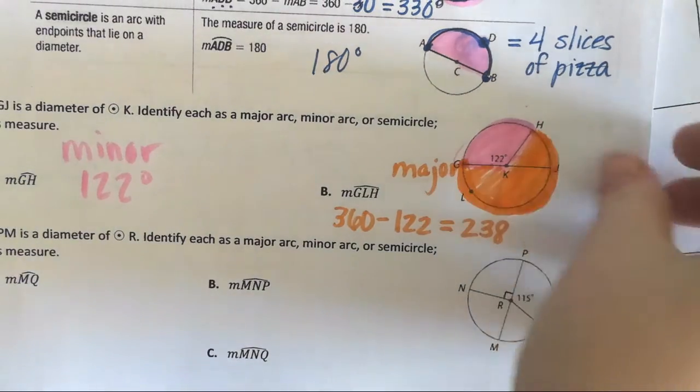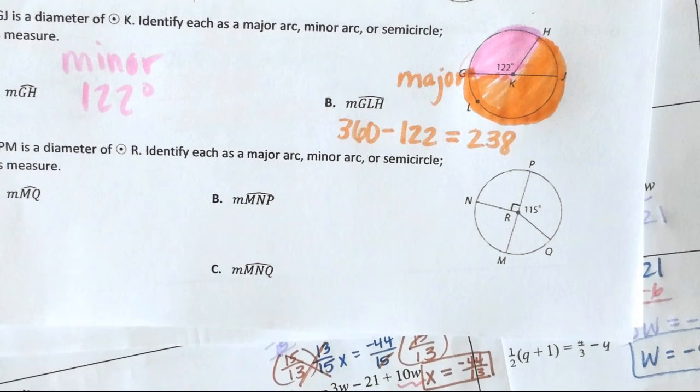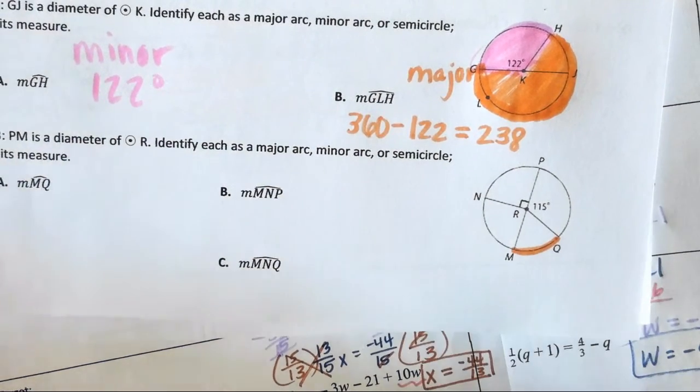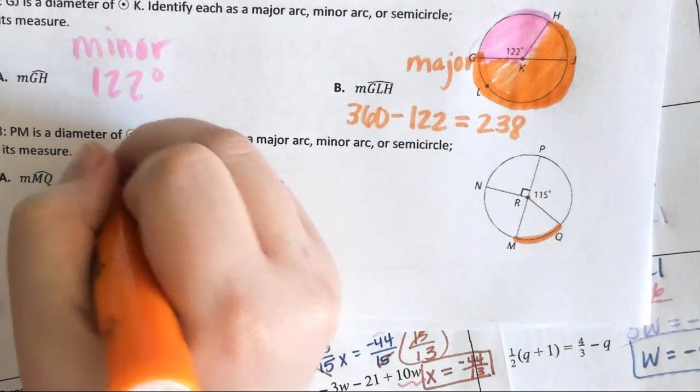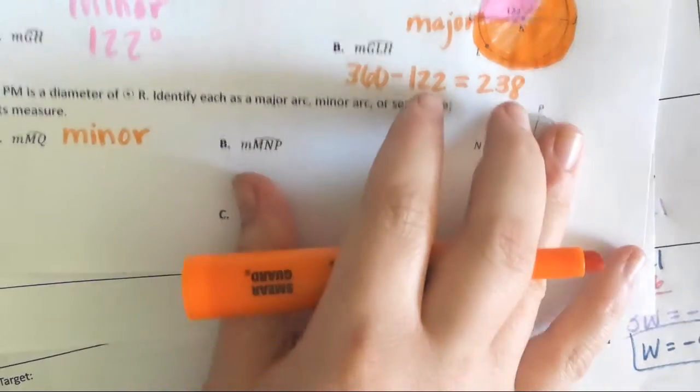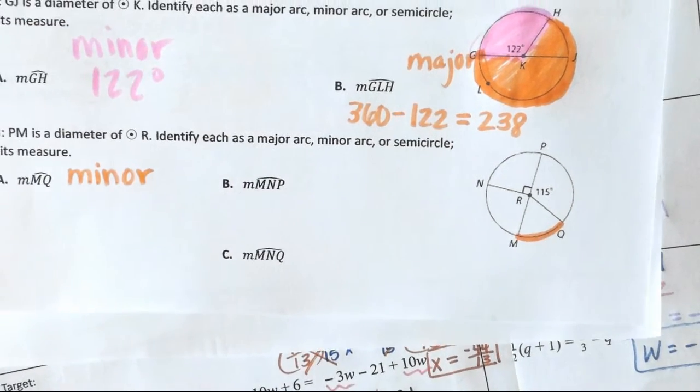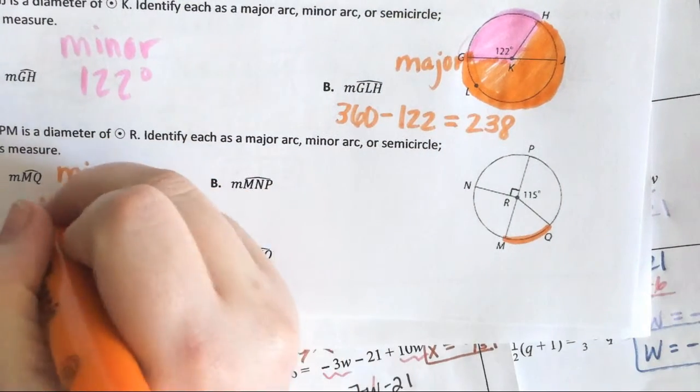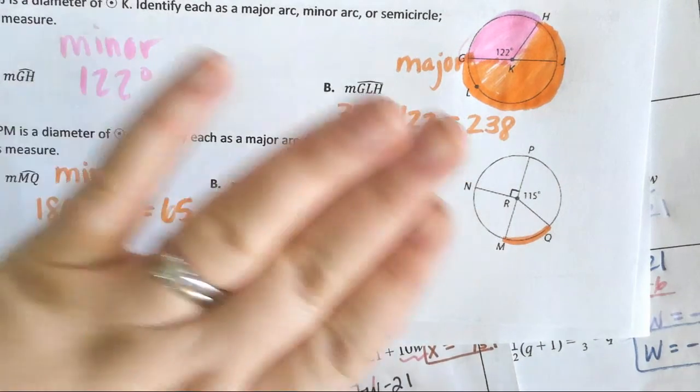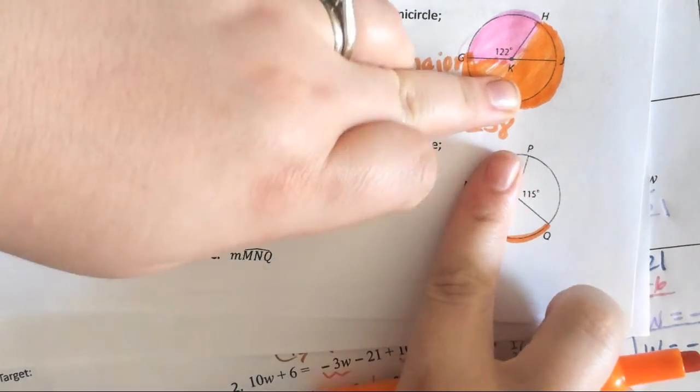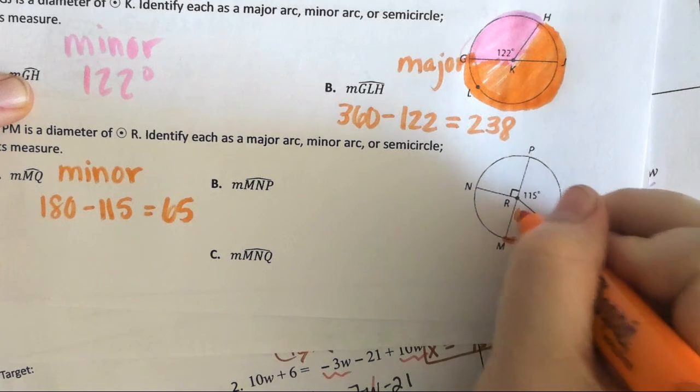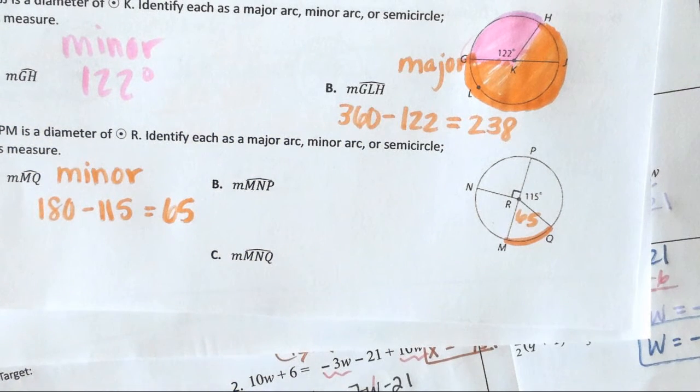We're going to do the exact same thing on example three. On example three, they want to know the measure of arc MQ first. M to Q, that's a minor. It is a minor. And I need a number. It was, whoever said 65 over there was correct. And then Caitlin, you solved it too. So it's going to be 180 minus 115, which is 65. Why am I doing that? Because I see a semi-circle. I see half a circle. So I did 180 minus 115, and I got 65. That would be the easiest way for that one.